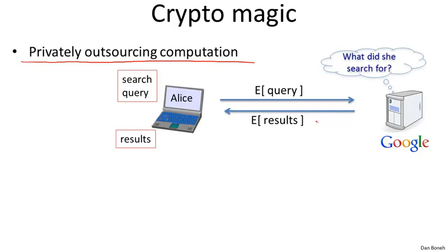Nevertheless, Alice learned exactly what she wanted to learn — these are magical encryption schemes. They're fairly recent, only a new development from about two or three years ago, that allow computation on encrypted data even without knowing what's inside the encryption. Before you rush off to implement this, running a Google search on encrypted data would probably take a billion years, but the fact that this is doable at all is quite surprising and already useful for relatively simple computations.